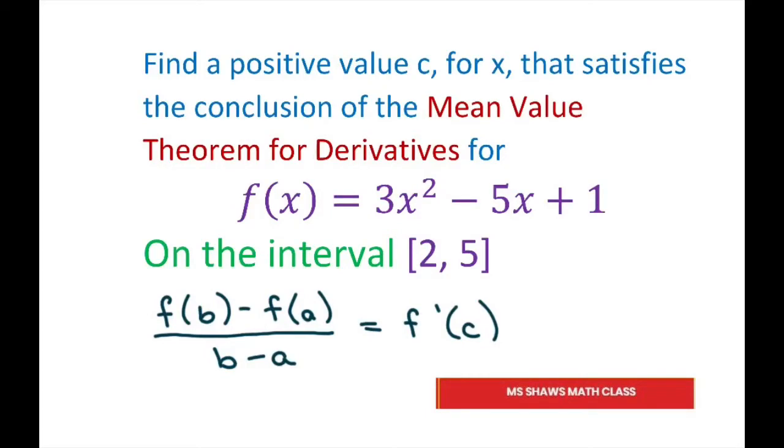Hi everyone. We're going to find a positive value of c for x that satisfies the conclusion of the Mean Value Theorem for derivatives for f(x) = 3x² - 5x + 1 on the interval [2, 5].